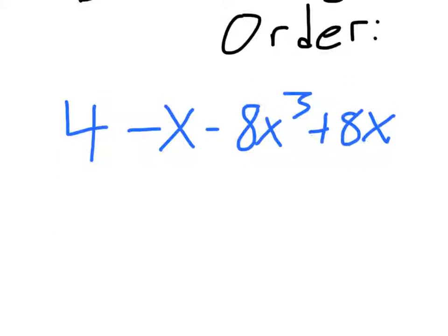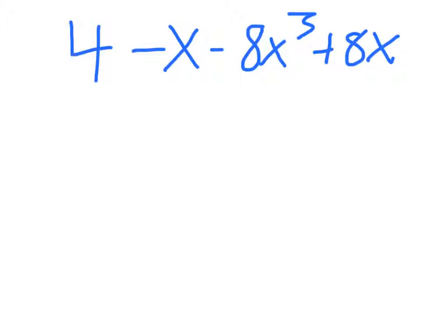Putting an expression in descending order means that the powers decrease as you look at it. So this is the biggest power. And notice I'm going to put a negative x to the third, because you've always got to watch the sign that's in front of your number.